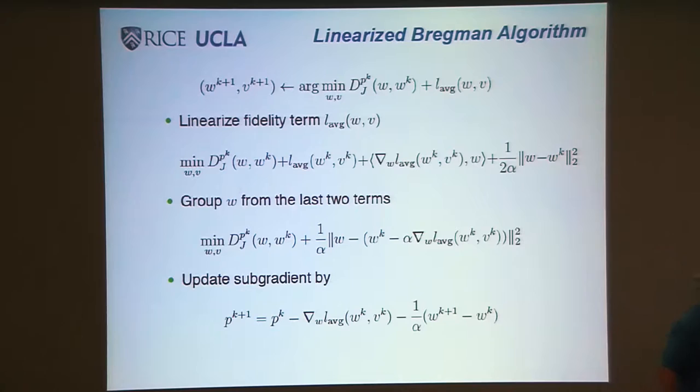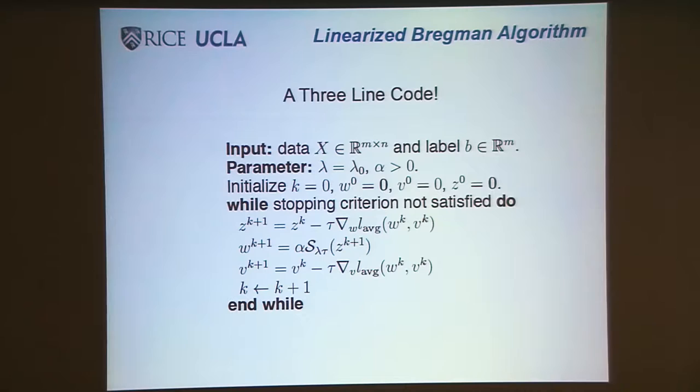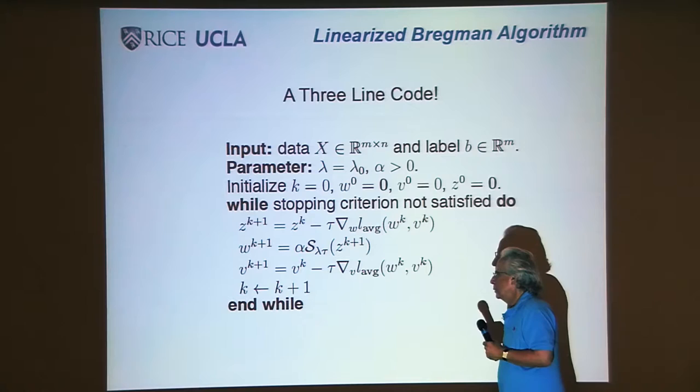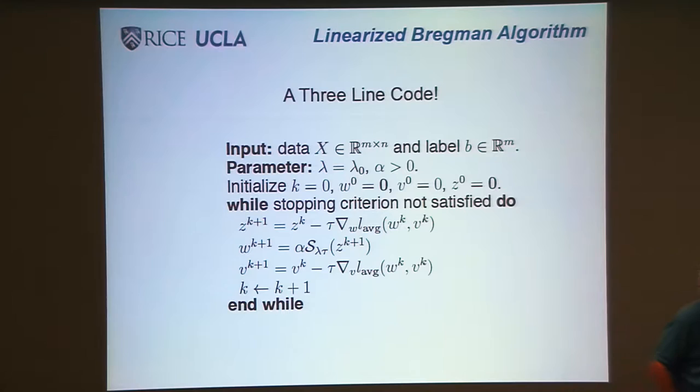Finally, we arrive at a three-line code. You have this gradient descent followed by shrinkage. V is updated, not W. That's the entire algorithm. Z is updated, not W. V is a red herring, which you do gradient descent on, so it makes it a little harder to analyze the problem, but not much. That's the whole algorithm.